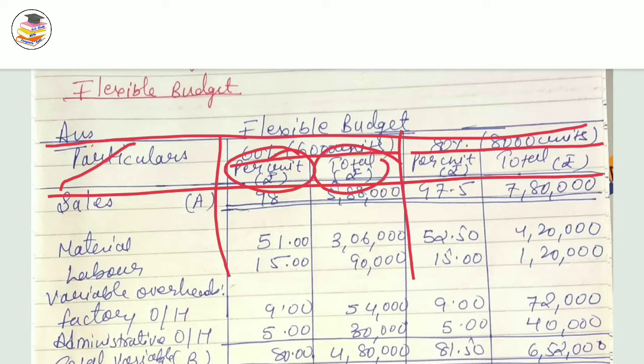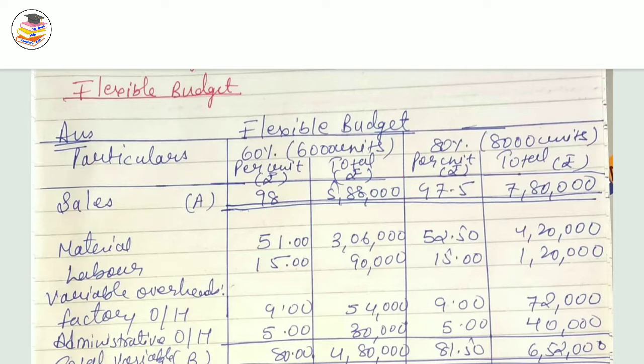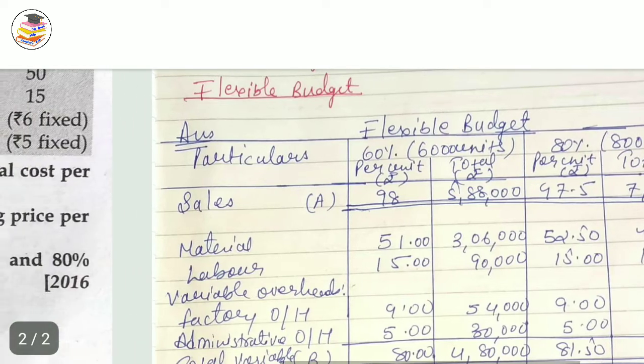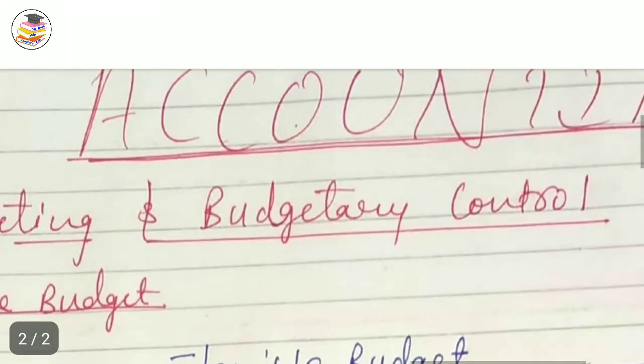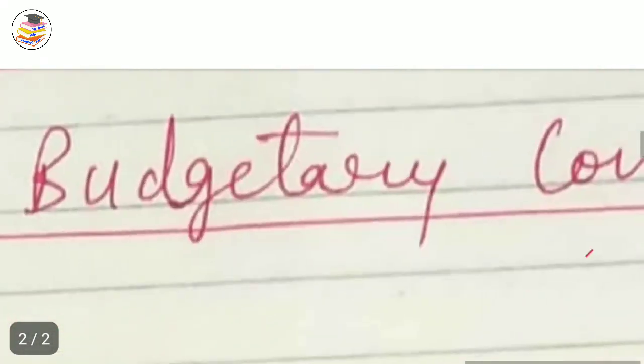When we want to calculate profit, the format should be: first I need to know the sale, then sale minus variable cost gives contribution, then contribution minus fixed cost gives profit. So I have to calculate in this way.